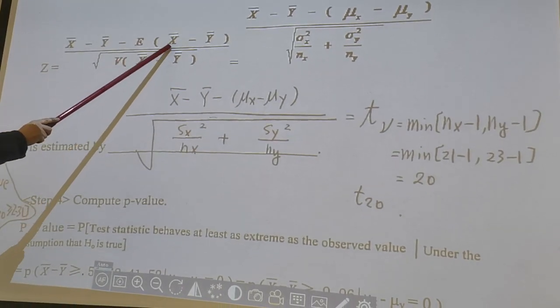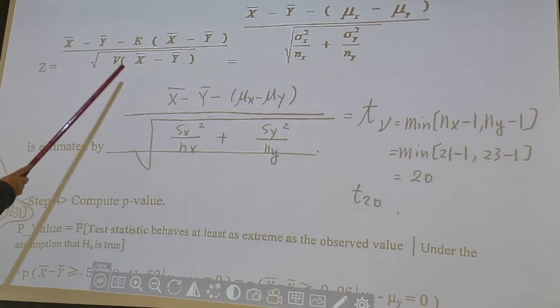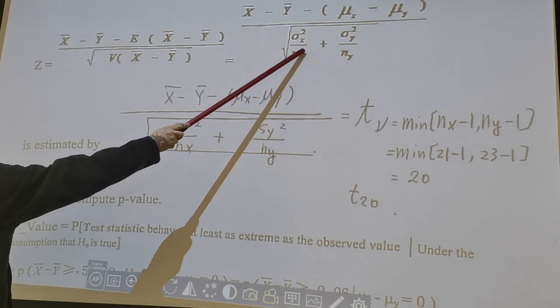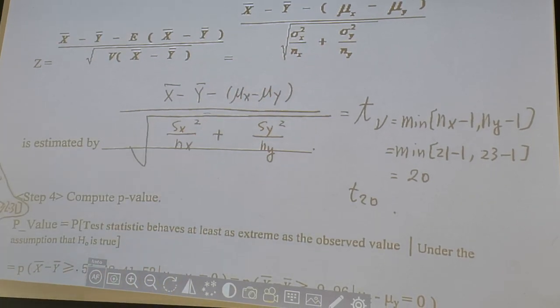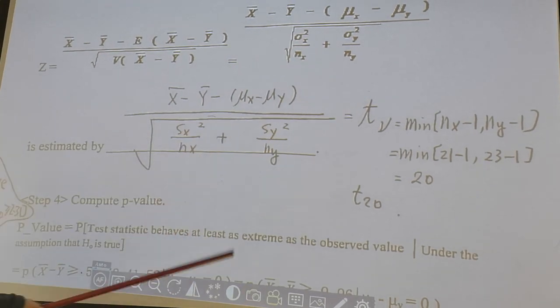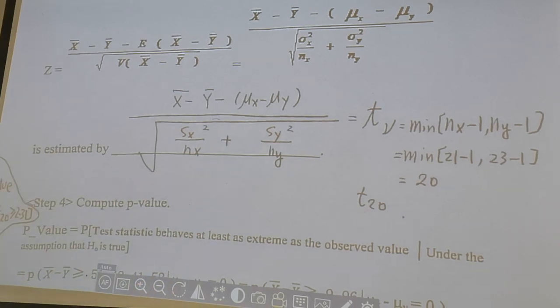The mean of x bar minus y bar is mu x minus mu y. The variance of x bar minus y bar is sigma x squared over nx. But in the real-life application, you don't know sigma x, you don't know sigma y. So you replace by s x and s y. And after this replacement,